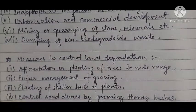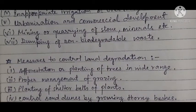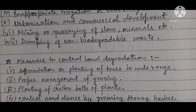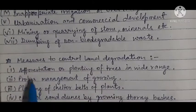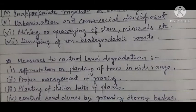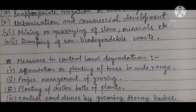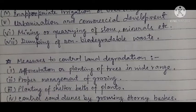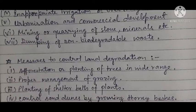Next question is measures to control land degradation — what measures or what ways can we adopt to control land degradation? Simple — whatever point was given in degradation, just do the opposite. Deforestation was there, so here it is afforestation — planting trees in wide range and in large scale. Planting trees on a large area is called afforestation. Number two is proper management of grazing — there should be proper management of grazing, meaning one fixed land should be designated as pasture and grazing land.